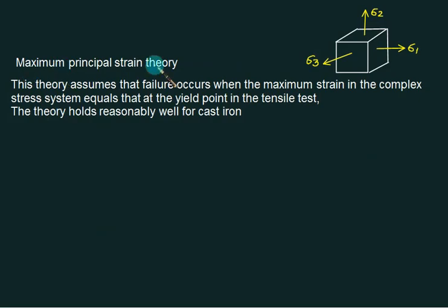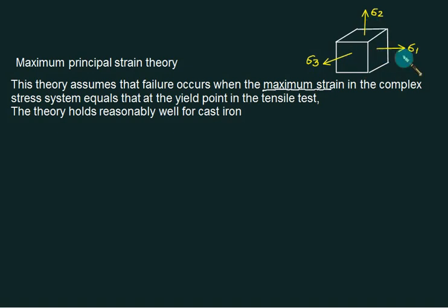Maximum Principal Strain Theory states that failure will occur when the maximum strain in the complex stress system equals the maximum strain at the yield point. The maximum strain is due to the principal stresses sigma 1, sigma 2, and sigma 3 — not sigma X, sigma Y, sigma Z. This theory is good for cast iron, which is a brittle material.